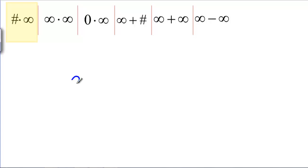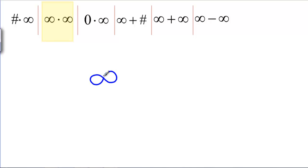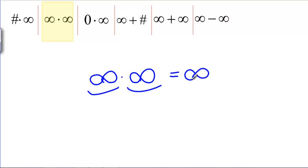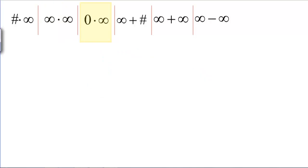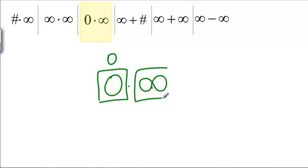For a non-zero number times infinity, like 3 times infinity, we already said that's going to be infinity. For infinity times infinity, if you take something really big and multiply it by something else really big, it's going to be really big — both infinities want the answer to be infinity, so there's no conflict. For 0 times infinity, zero times anything tries to make the answer zero, while infinity times anything tries to make it infinity. So these are pulling in opposite directions — it's like a tug of war — and this is indeterminate.